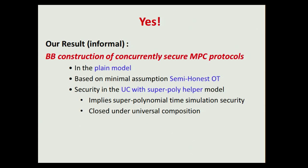In this work, we provide such a construction. We give a black box construction of a concurrently secure multi-party computation protocol in the plain model. Our protocol is based on the minimal assumption of semi-honest OT, and it achieves security in a model called UC with super-polynomial time helper. Just keep in mind that it directly implies super-polynomial time security and also enjoys universal composition.